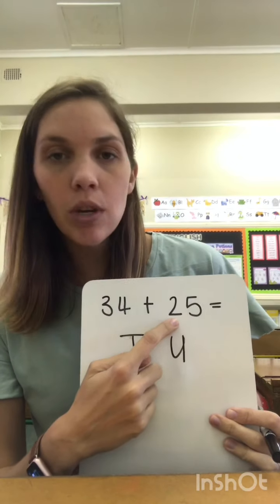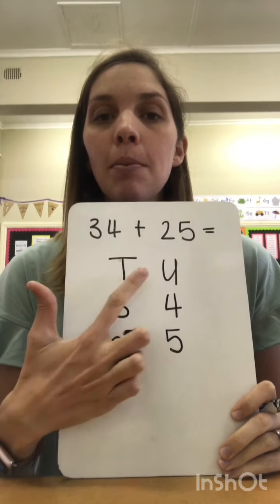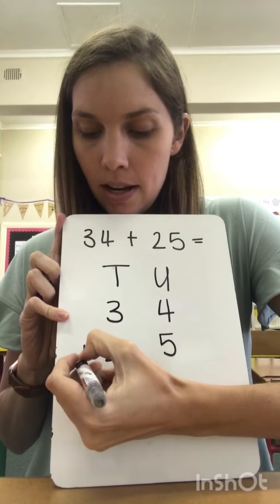And for the number 25, I know that my number 2 is the ten and my 5 is the unit. So when I write those in, I need to make sure that the 3 is under the tens column and that the 4 is under the units column, and that the 2 is under the tens column and the 5 is under the units column like this.